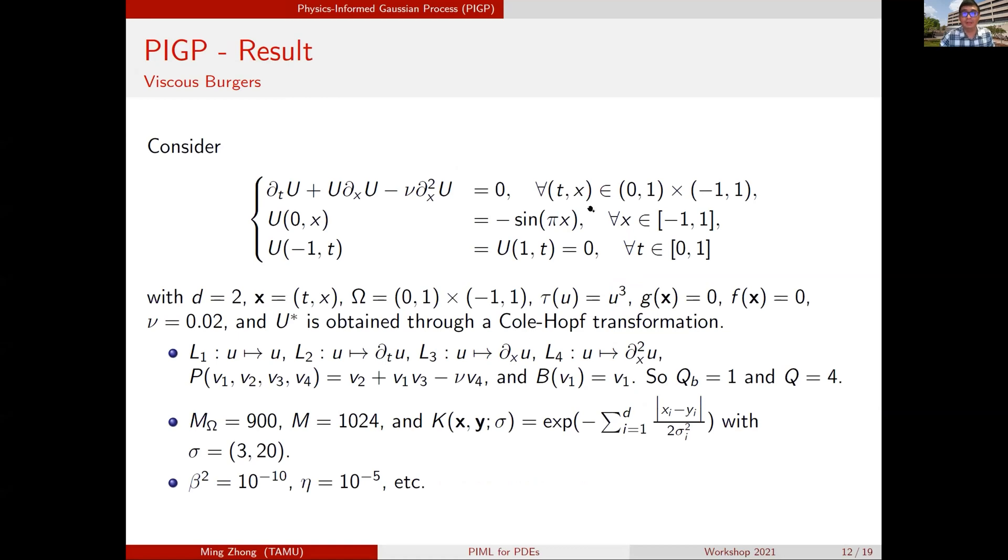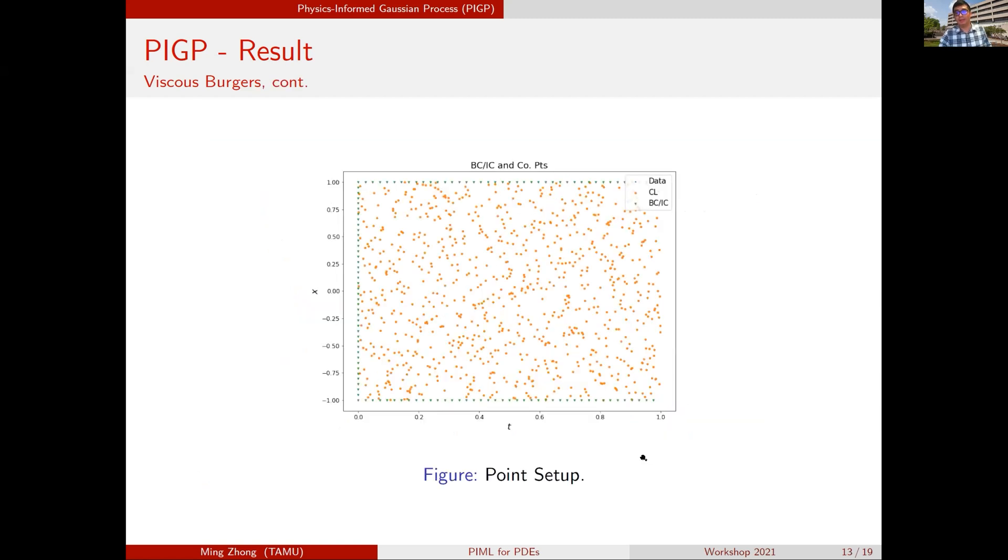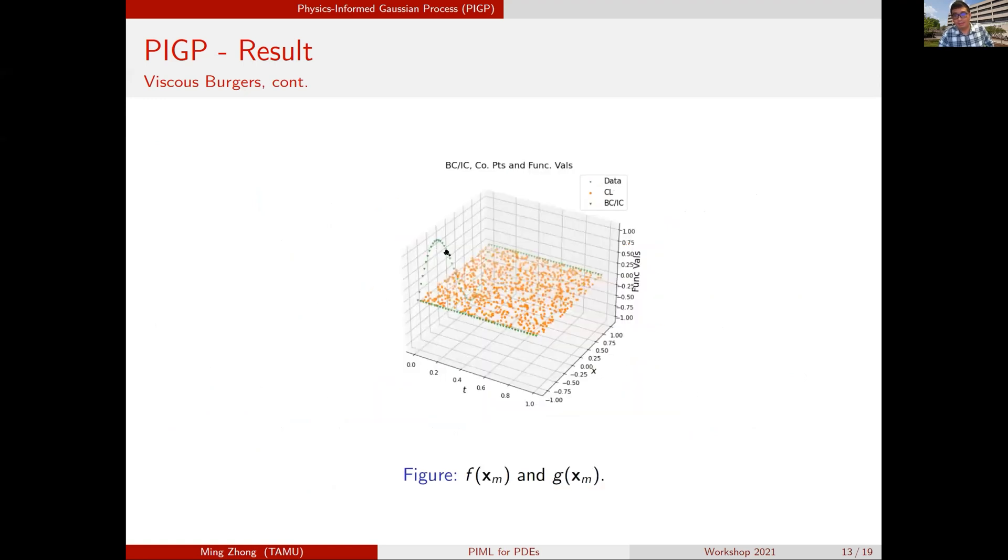You can also use Gaussian process to solve parabolic PDEs. We can assume that we have this viscous Burgers equation. You have the viscosity controlled by the uniform viscosity term. Here's the setup. You have four different linear operators. This is the PDE equations, this is the boundary equation. We put everything into the Gaussian process. It seems we have a time component and the X component, but we think of space-time as a unity. But, in fact, this is not isometric, so we'll use a non-isometric kernel to deal with that.